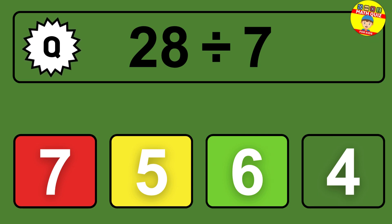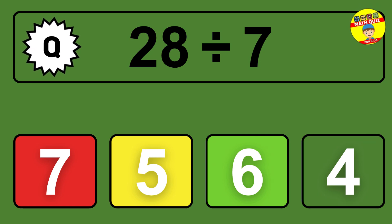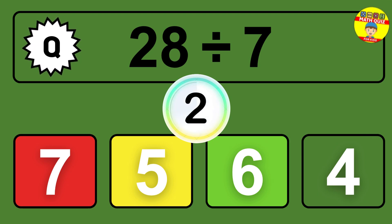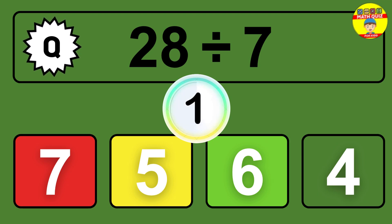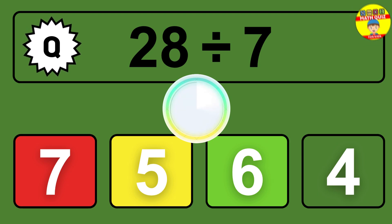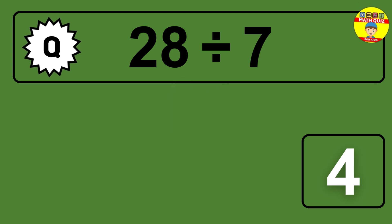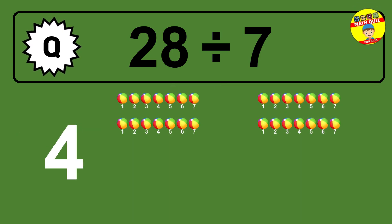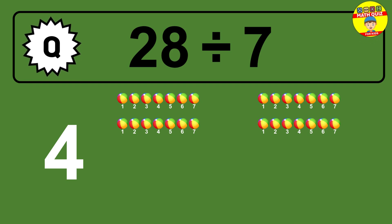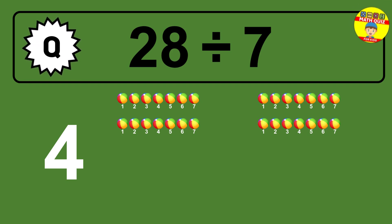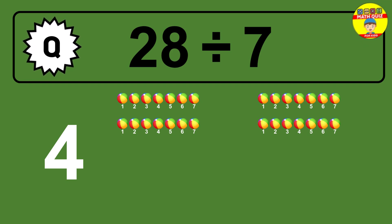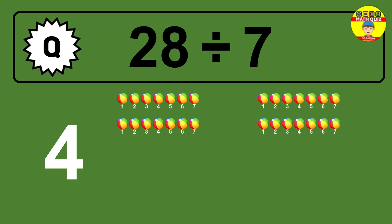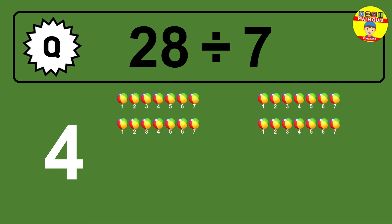28 divided by 7 — time to think. Let's go to the solution. Divide the number 28 by 7. Each group contains 7 units, so dividing 28 by 7 results in 4 equal groups. Thus, the result is 28 divided by 7 equals 4.